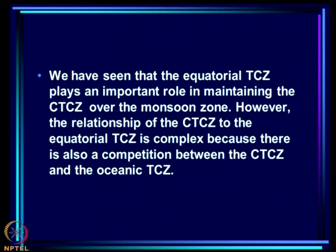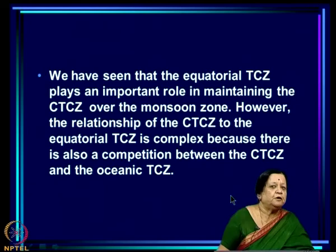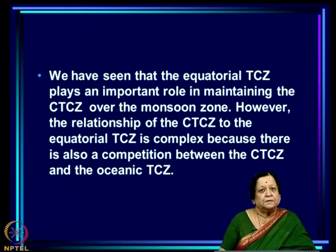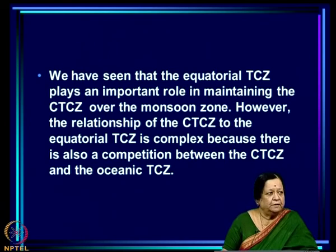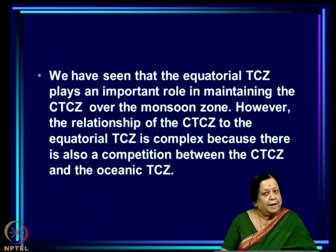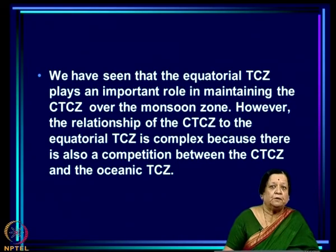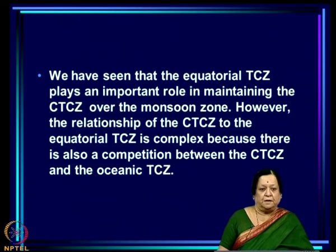The equatorial TCZ plays a very important role in maintaining the CTCZ over the monsoon zone, so the equatorial oceanic TCZ is a friend of the monsoon — helpful in maintaining the CTCZ and therefore in large-scale monsoon rainfall. But the relationship is not all positive; it is complex, and there can also be competition between the CTCZ and the oceanic TCZ.